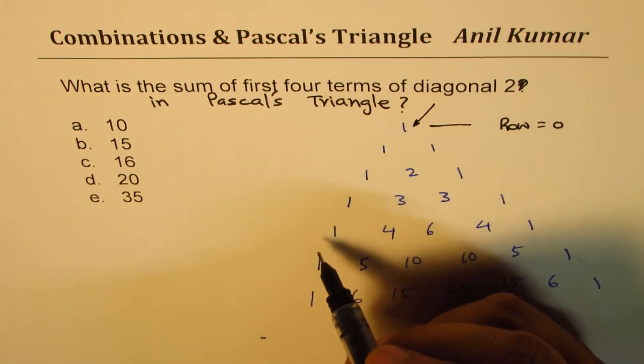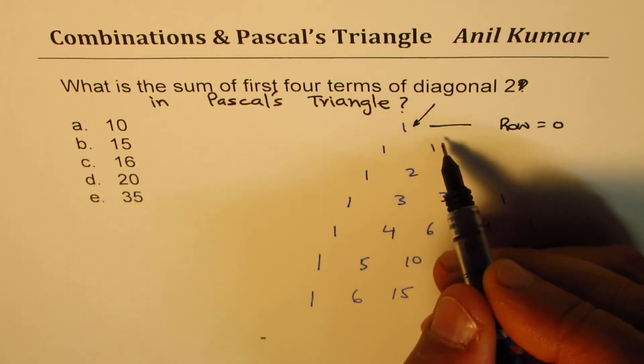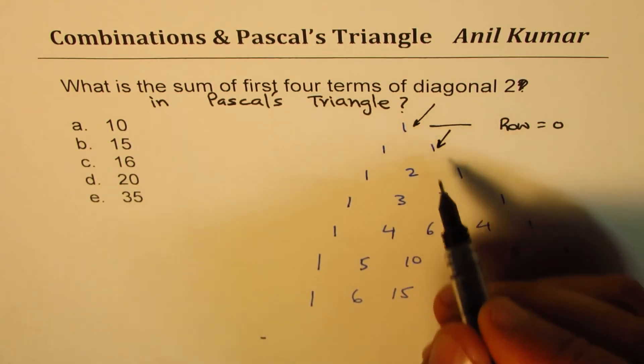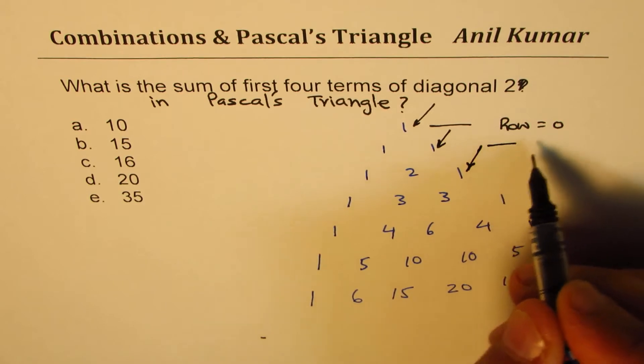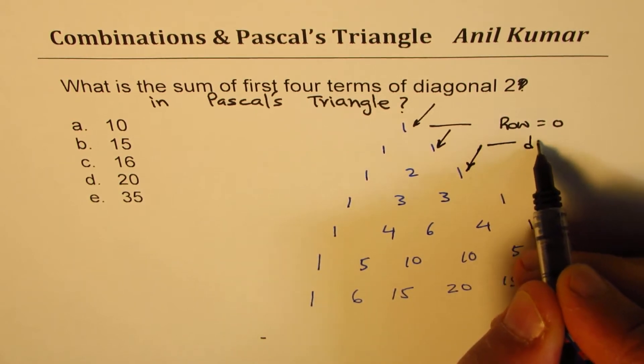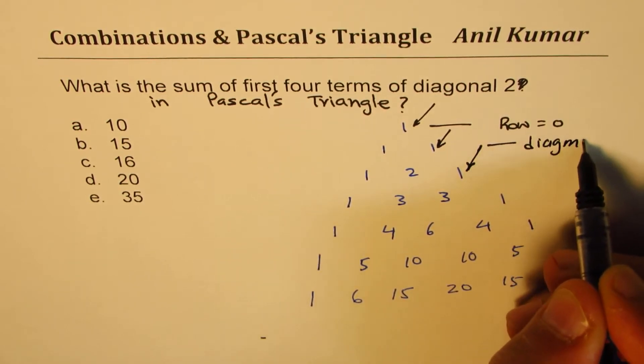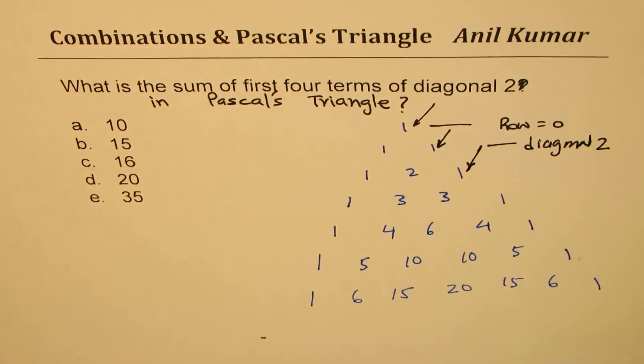And if you see like this, these are the diagonals. So that's diagonal one, this is diagonal - I mean zero, diagonal one - and this is the second diagonal. So this one which I'm drawing here is actually diagonal two, correct?